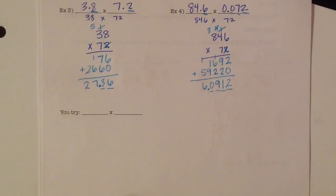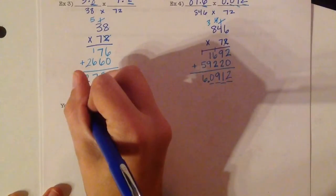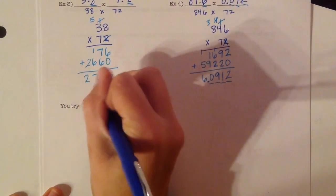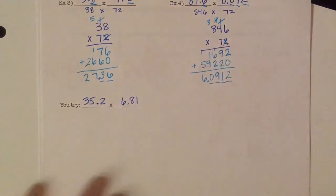So let me give you one last problem that I want you to try on your own and then get it checked by me. So we're going to do 35 and 2 tenths times 6 and 81 hundredths.